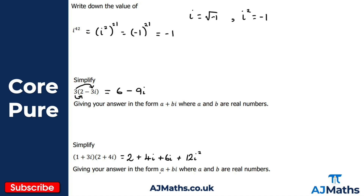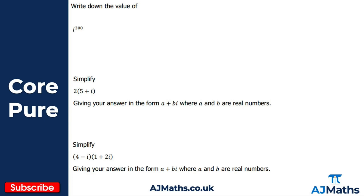We want the result in the form a plus bi, so we have two, four i, six i, and twelve i squared. That twelve i squared is going to cause a problem, so we simplify using i squared equals minus one. Twelve i squared becomes twelve times minus one, which is minus twelve. Simplifying: two plus minus twelve gives minus ten, and four i plus six i gives ten i. So the answer is minus ten plus ten i.